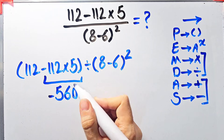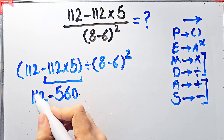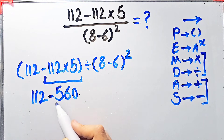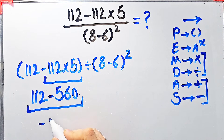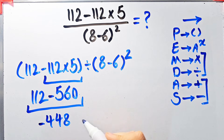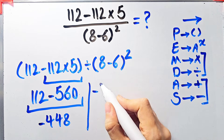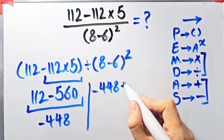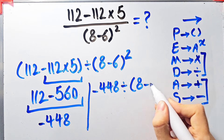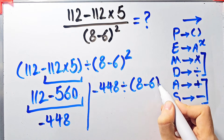Now we have 112 minus 560, which equals negative 448. Now the question is: negative 448 divided by open parentheses 8 minus 6 close parentheses, all to the power of 2.